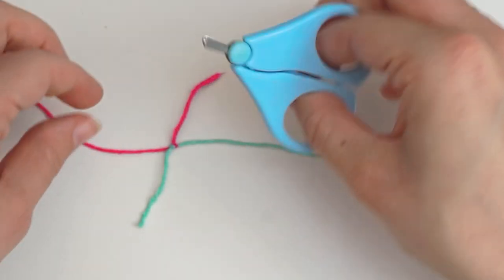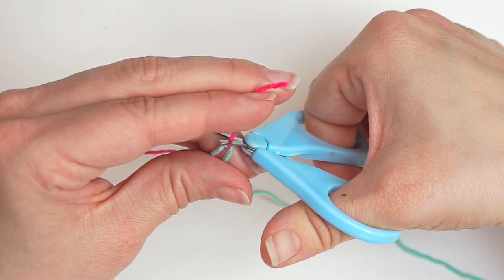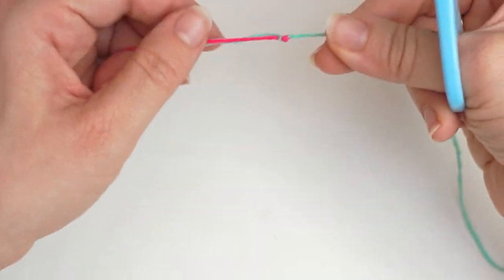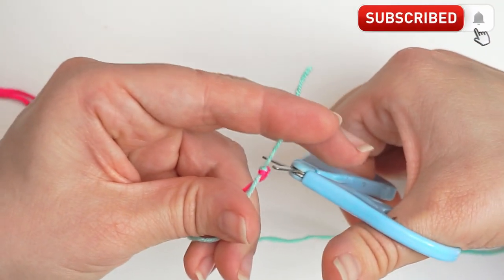Find your scissors. Cut out any excess yarn. Two small ends right here.